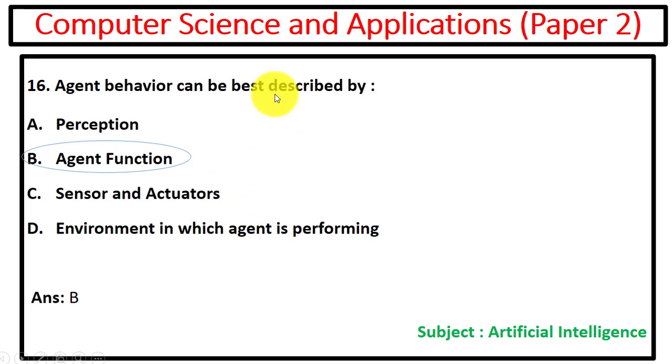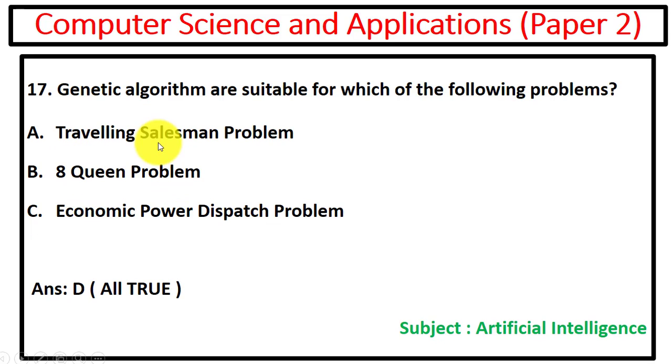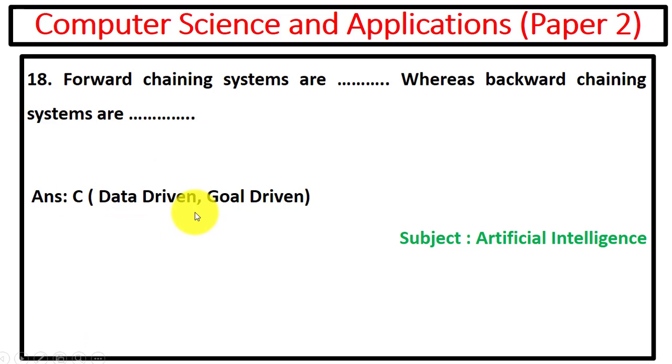Next is agent behavior, we can describe the agent behavior by the agent function. Next question is genetic algorithms are suitable for which of the following problems. So using genetic algorithm we can solve eight queen problem, traveling salesman problem, and economic power dispatch problem, so all are true. Next question is forward chaining systems are data driven, whereas backward chaining systems are goal driven.